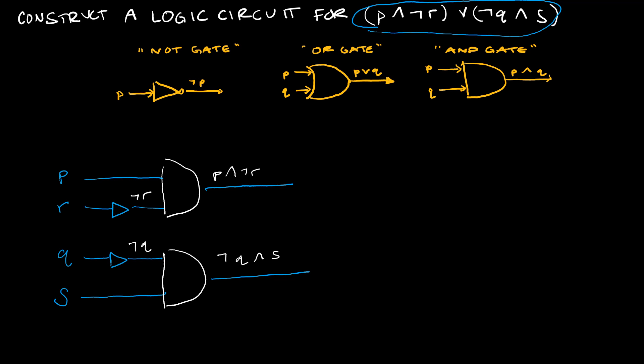Notice now I've got my P and not R, I've got my not Q and S. And in between those, I have OR. So now I'm going to make an OR gate. Instead of making a giant OR gate, we're just going to go like this. Nope, not a good artist. That's why I didn't go into art. What's my output? My output is exactly what I wanted, which is P and not R or not Q and S.